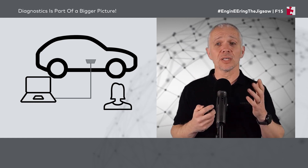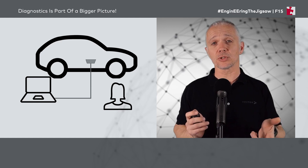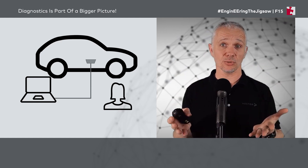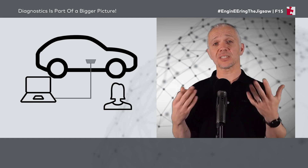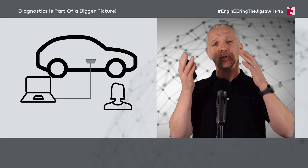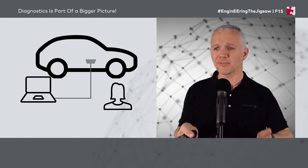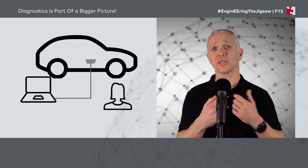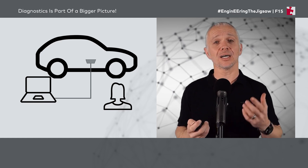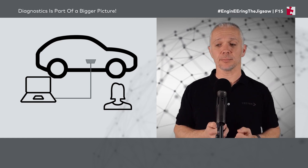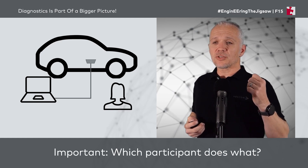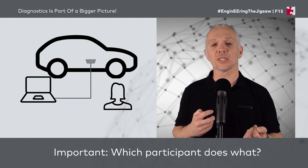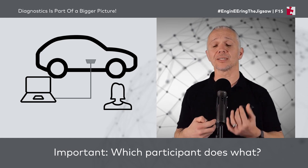An important part of defining the operative perspective is to define exactly which participant or participants are involved in a specific task. For example, the tester can't open a door or press a button, but the technician can. Similarly, the technician can't directly talk to ECUs to find out if they've logged a fault or ask them to turn on an output — but the tester gives that capability.